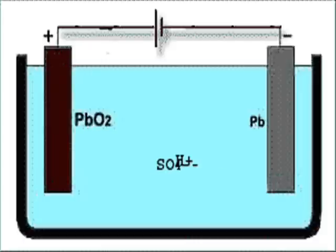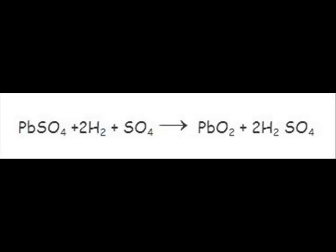Negative sulphate ions move towards the electrode connected with the positive terminal of the DC source, where they give up their extra electrons and become radical sulphate. This radical sulphate reacts with lead sulphate of the anode and forms lead peroxide and sulphuric acid.